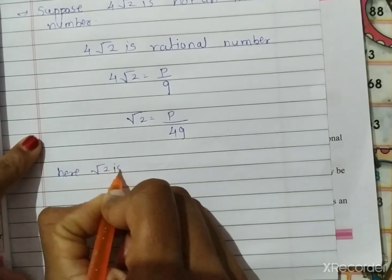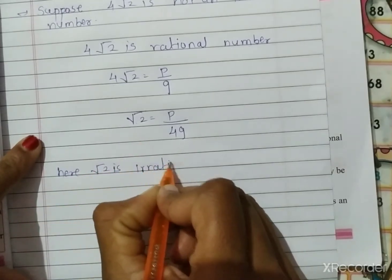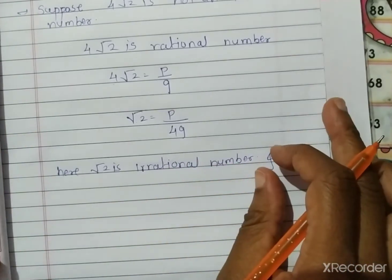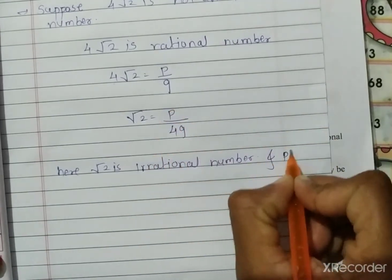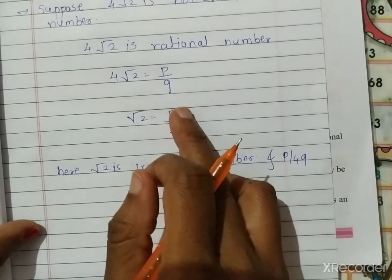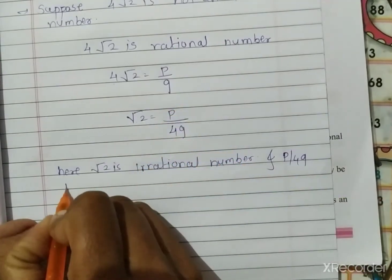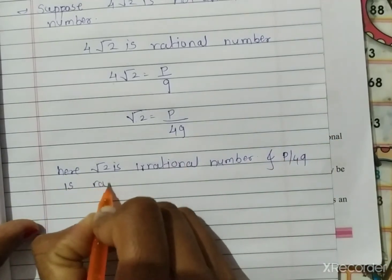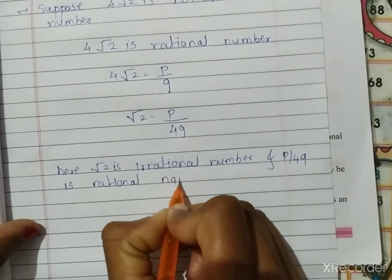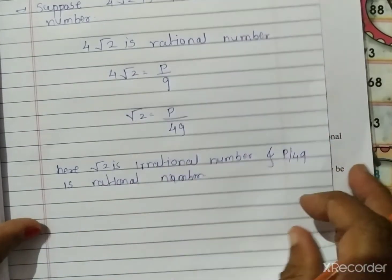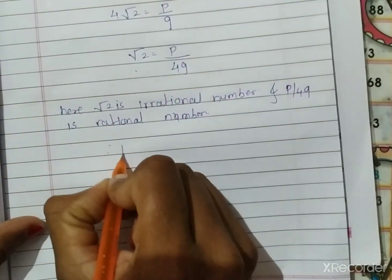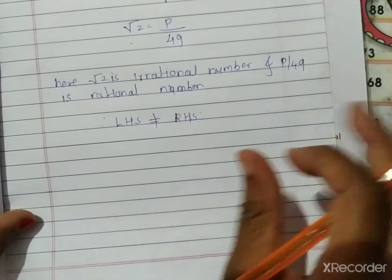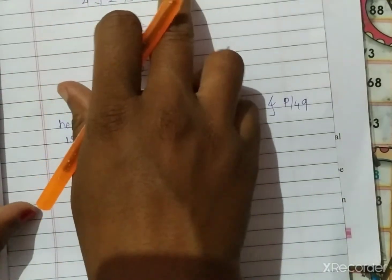Here, √2 is an irrational number. But p divided by 4q is a rational number, because it is in the form p divided by q. So we have LHS equal to RHS, but that means LHS is not equal to RHS — which is contradictory to our statement.